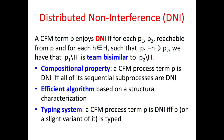Our proposal is the property called Distributed Non-Interference, DNI for short. P enjoys DNI if, for each P1 and P2 reachable from P and for each high action H such that P1 can do H and reach P2, we have that the low behavior of P1 is team bisimilar to the low behavior of P2. DNI is a compositional property equipped with an efficient algorithm, and DNI is characterized syntactically by a typing system.